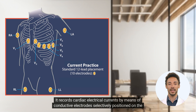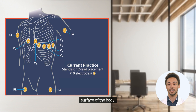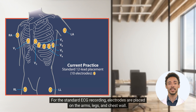The ECG machine records cardiac electrical currents by means of conductive electrodes selectively positioned on the surface of the body. For the standard ECG recording, electrodes are placed on the arms, legs, and chest wall.